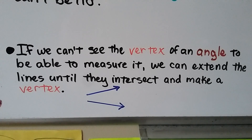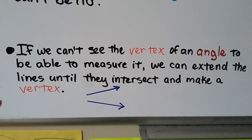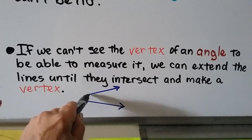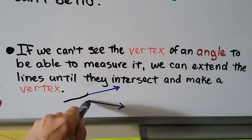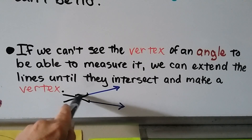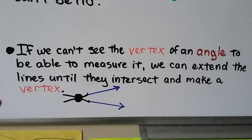If we can't see the vertex of an angle to measure it — for example, if something is blocking it — we can extend the lines of the rays until they do intersect and form a vertex. We use a straight edge to extend them until they make a vertex, and then we use that point to measure our angle. Just remember: you can extend lines to help you measure angles.